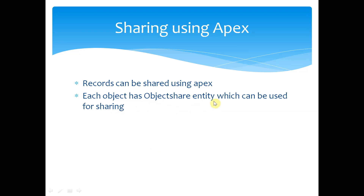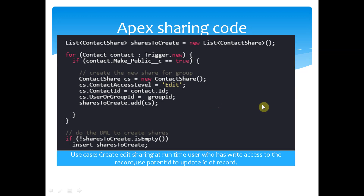Now we can also do sharing via Apex. Basically, each object has got an object share entity — essentially an SObject within it — which is used for sharing. Whenever you do sharing, a record gets entered into the object share object.